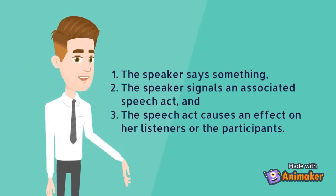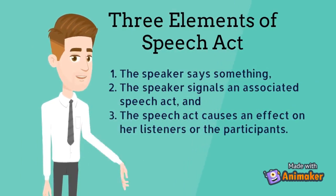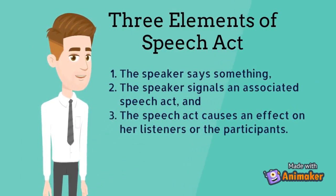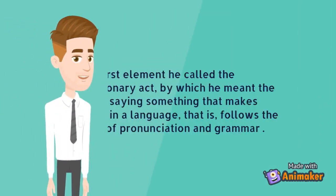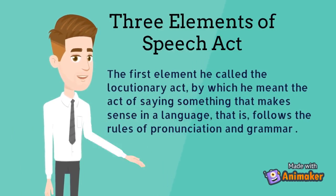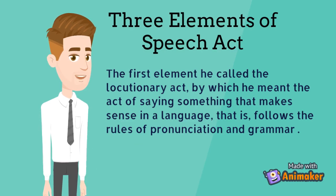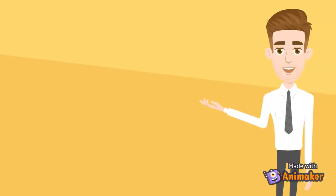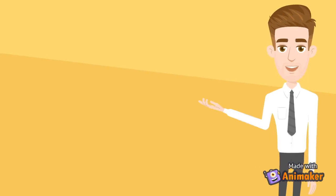Austin proposed that communicating a speech act consists of three elements: the speaker says something, the speaker signals an associated speech act, and the speech act causes an effect on the listeners or participants. The first element he called the locutionary act, by which he meant the act of saying something that makes sense in a language — that is, follows the rules of pronunciation and grammar. The second, the action intended by the speaker, he termed the illocutionary act.